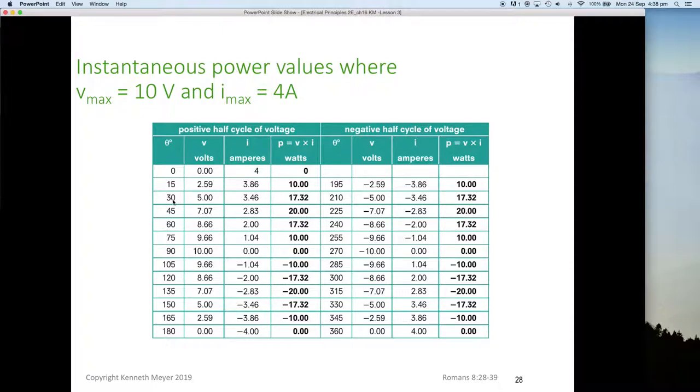Let's bump up to 30 degrees. At 30 degrees, 5 volts, 3.46 amps, 17 watts positive. Bump up to 75 degrees, 9.6 volts, one amp, pretty close to 10 watts. Then at 90 degrees, 10 volts, but no current equals no power. So you'll notice I've just been through one quarter cycle. From zero to 90 is a quarter of a cycle. In a quarter of a cycle the power has increased from zero to the maximum and then decreased to zero again.